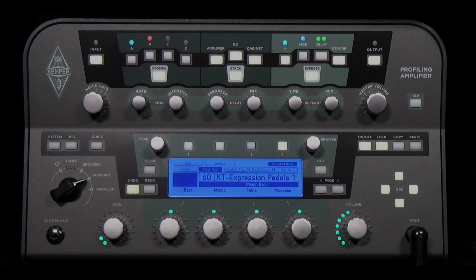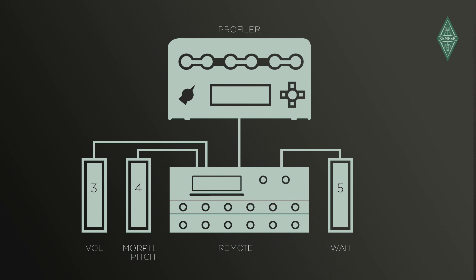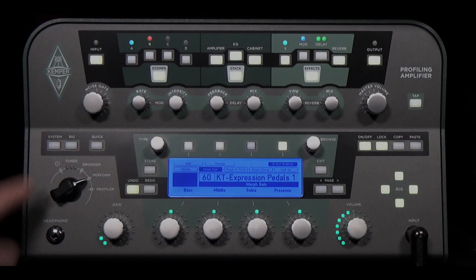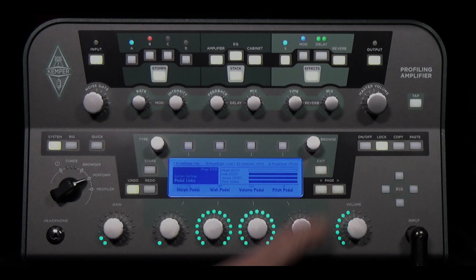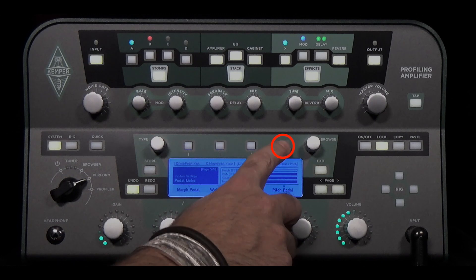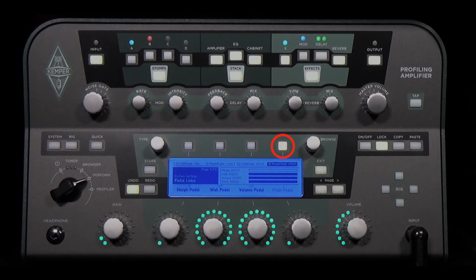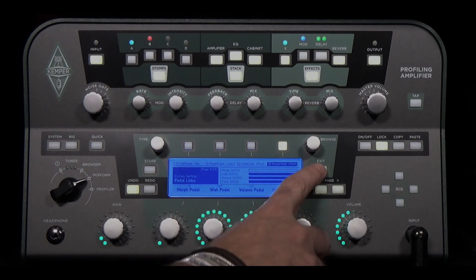You can reduce your setup if you use the same pedal for controlling pitch and morph alternately. If a rig uses both at the same time, they will be controlled simultaneously. To do this, press the system button and go to the pedal links page, then press soft button 4. This activates the morph pedal to pitch function, so you can now control the pitch functions with the morph pedal.